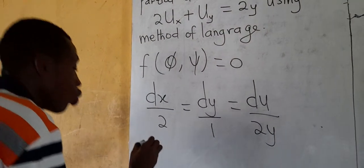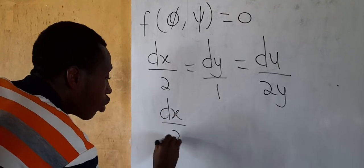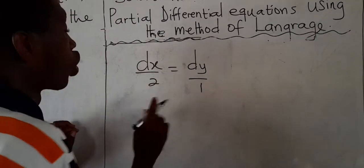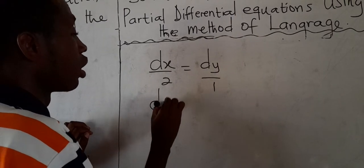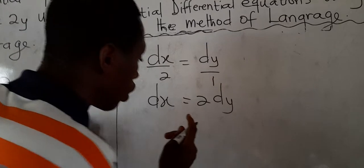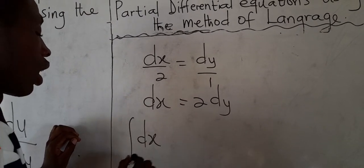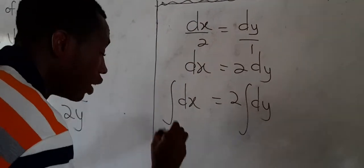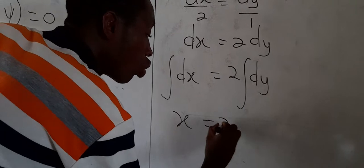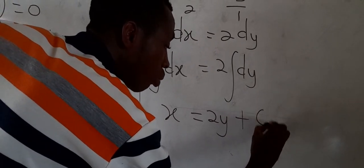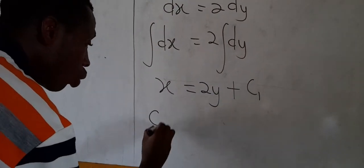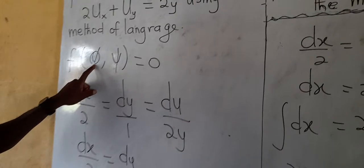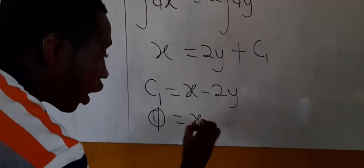To find our first constant c1, we equate dx over 1 to dy over 1 — that is, dx = 2dy... We cross-multiply and integrate both sides: the integral of dx equals 2 times the integral of dy, giving x = 2y + c1. Making c1 the subject: c1 = x − 2y. Since c1 is our first constant π, we have π = x − 2y.